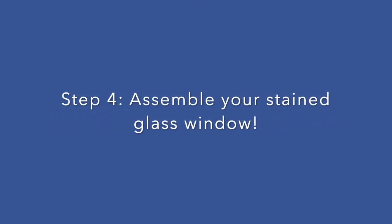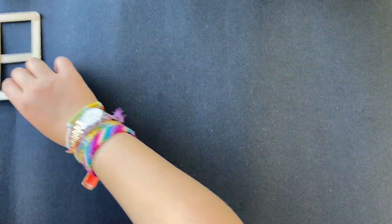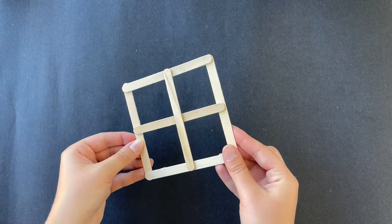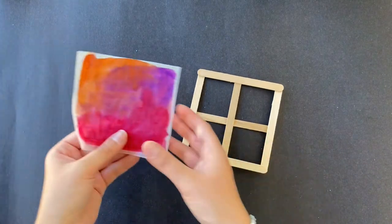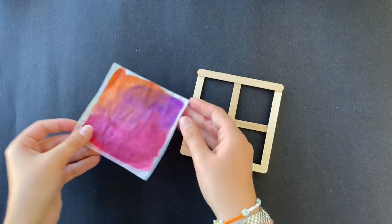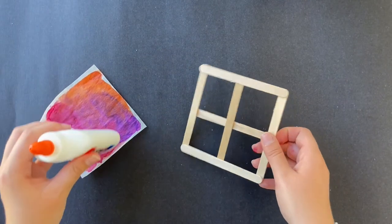Now you can assemble your stained glass window. I'm grabbing my frame and I'm grabbing my stained glass, both of which are fully dry. You really need them to be dry to put them together.